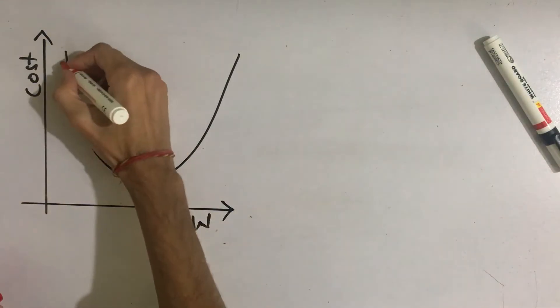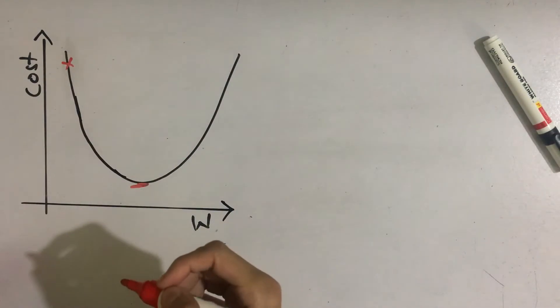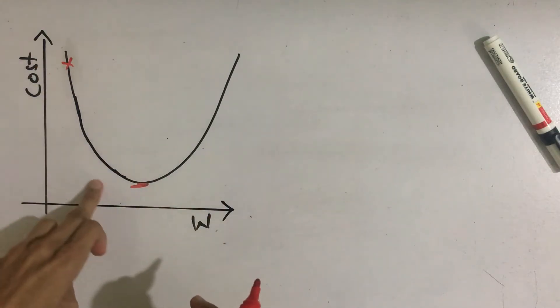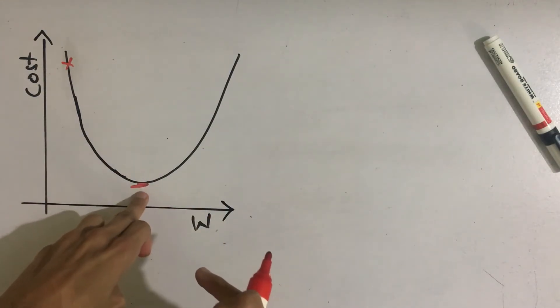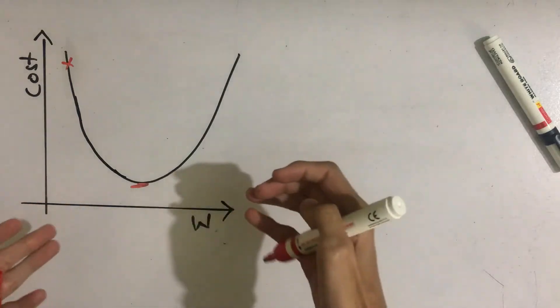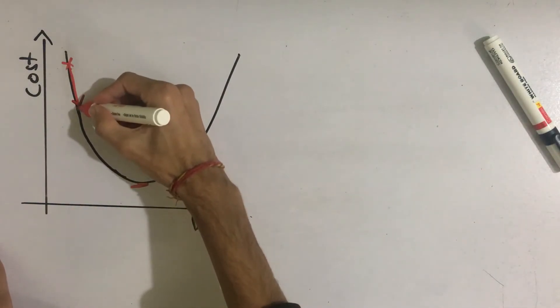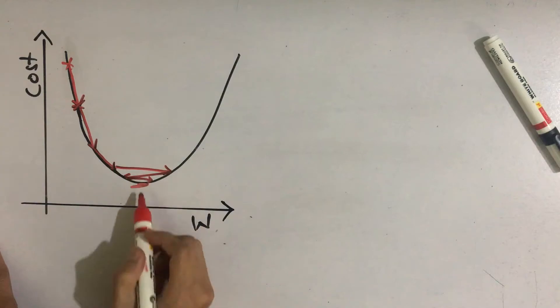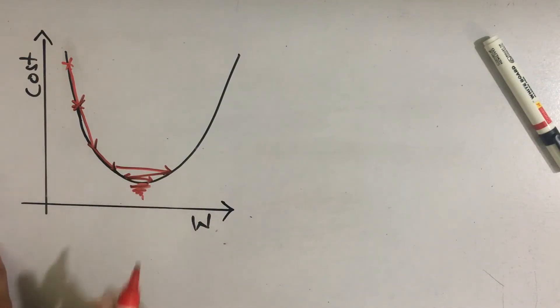But let's say if we start at this point initially, then we need to converge at the minimum point right here. So we can do this by taking small small steps like this, and eventually oscillate at this minimum region.